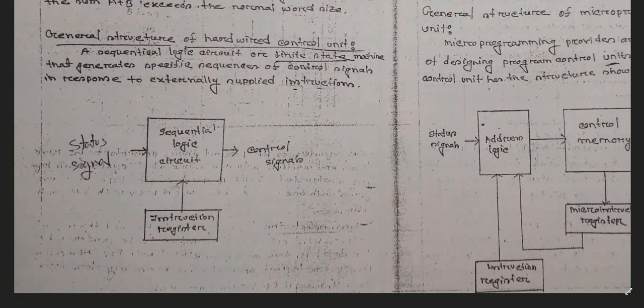The general structure of the hardware control unit includes the status signal, then the sequential logic, then the control signals which are connected with the instruction registers.